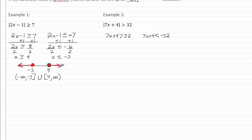So now solve our two equations. Subtract four from both sides, we get 7x is greater than 28, divide by seven, and we get x is greater than 4.